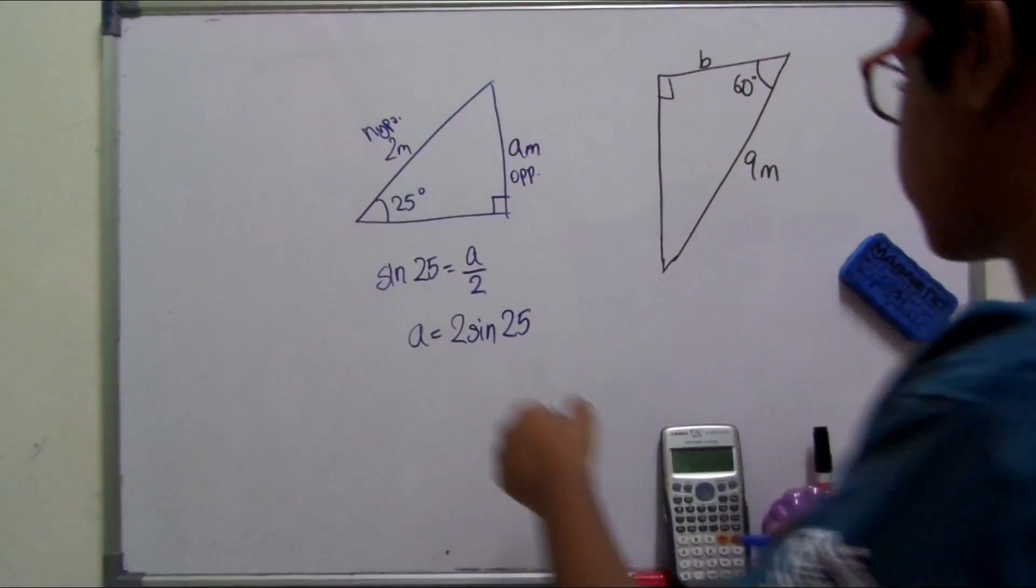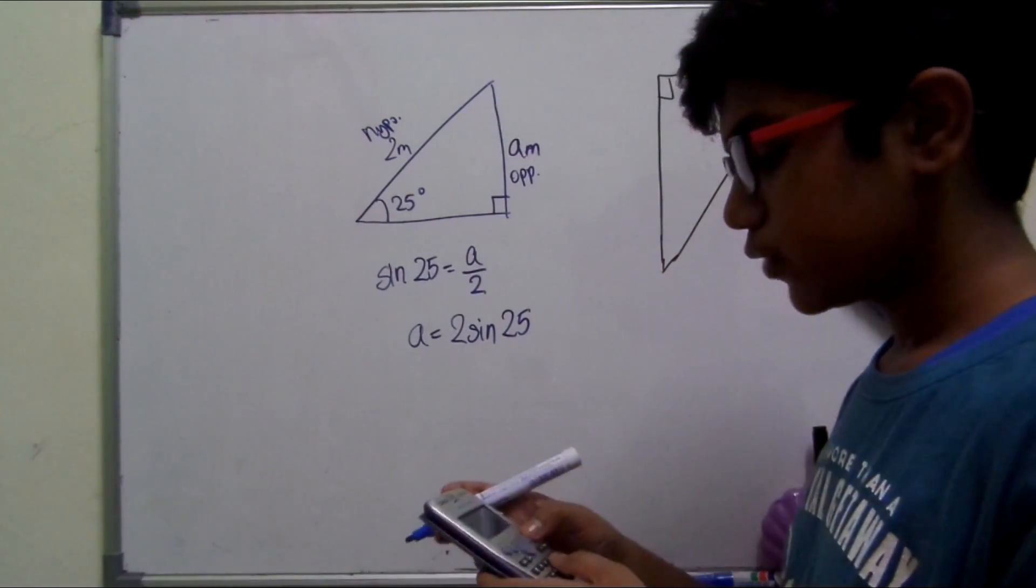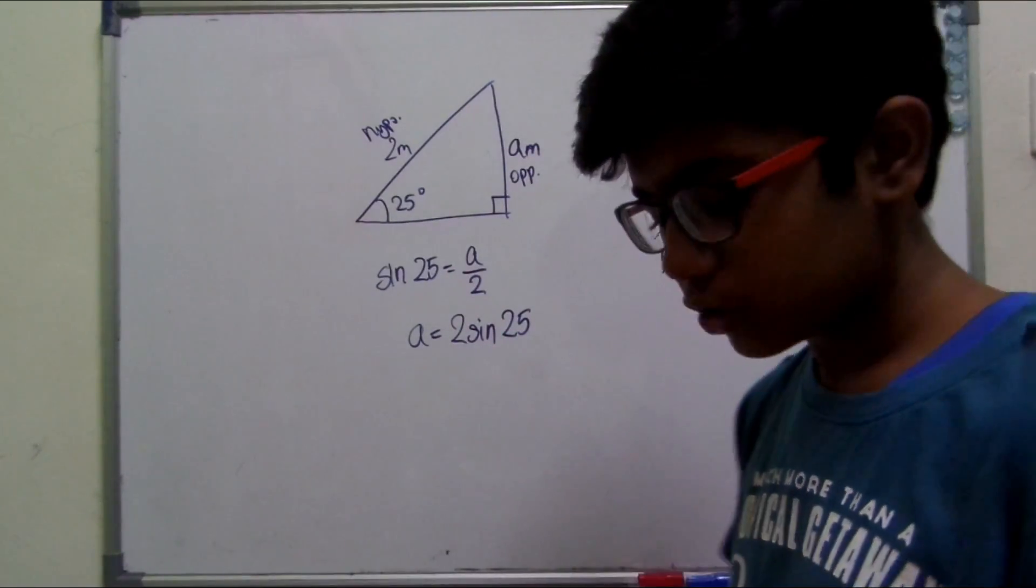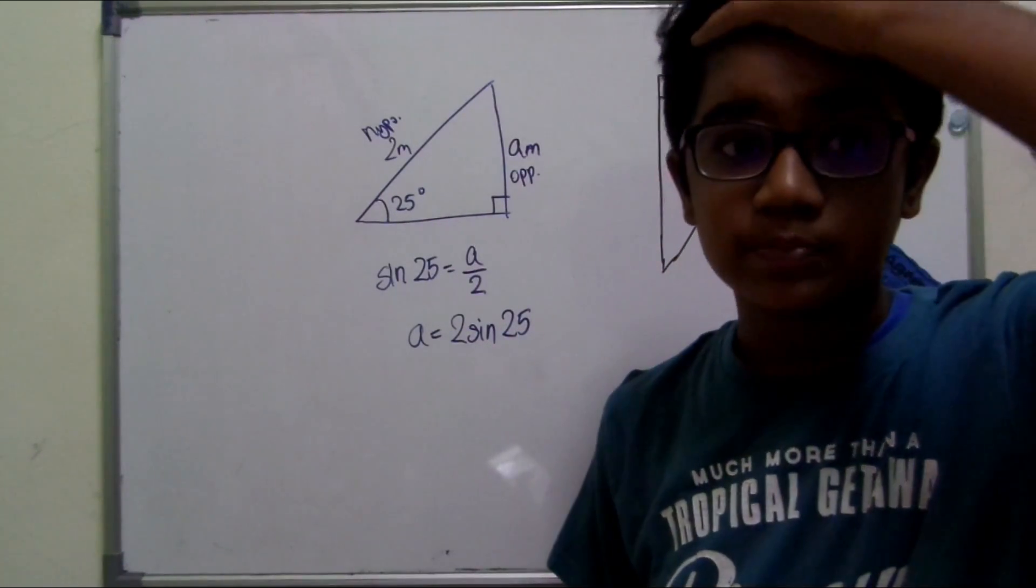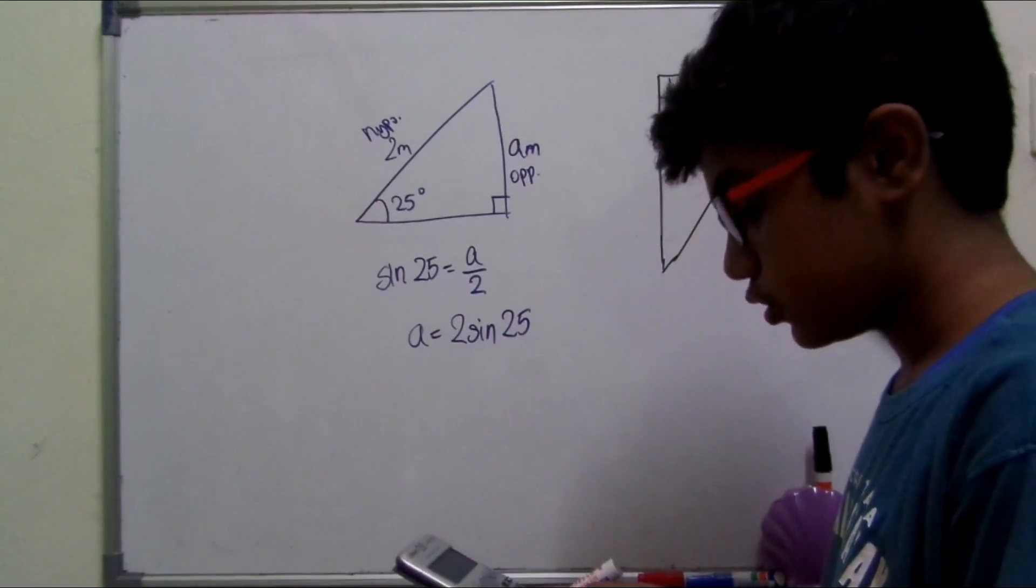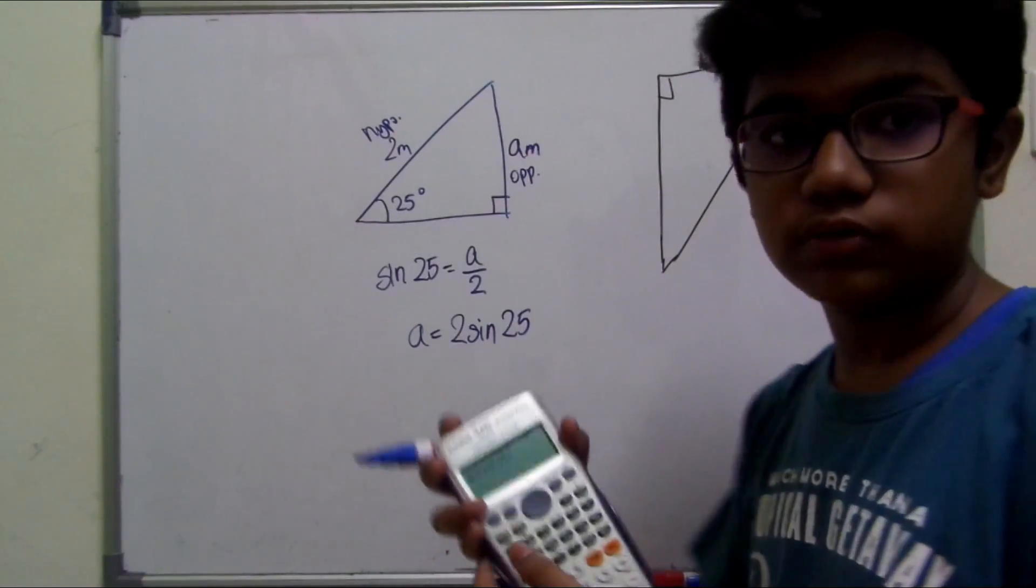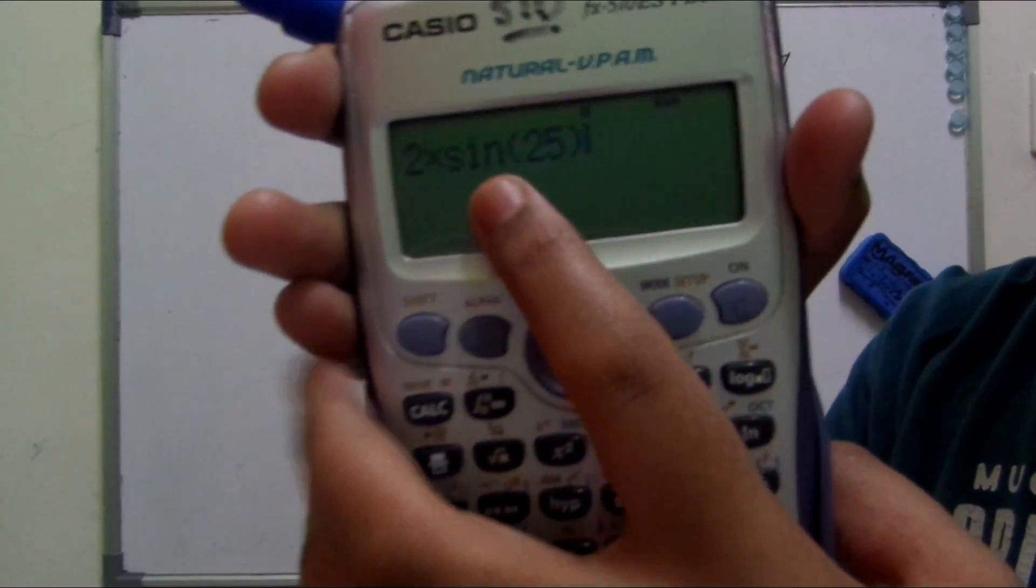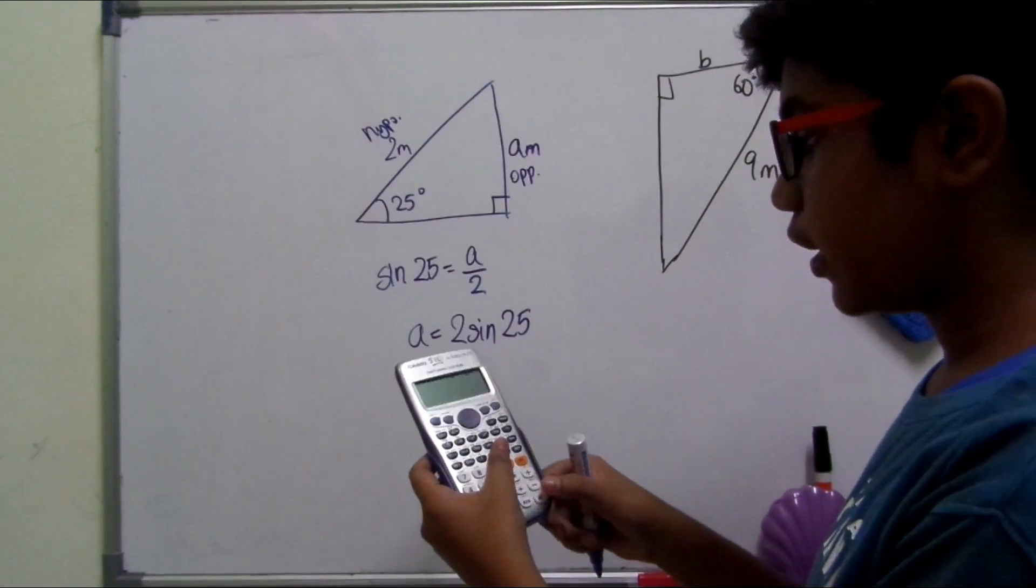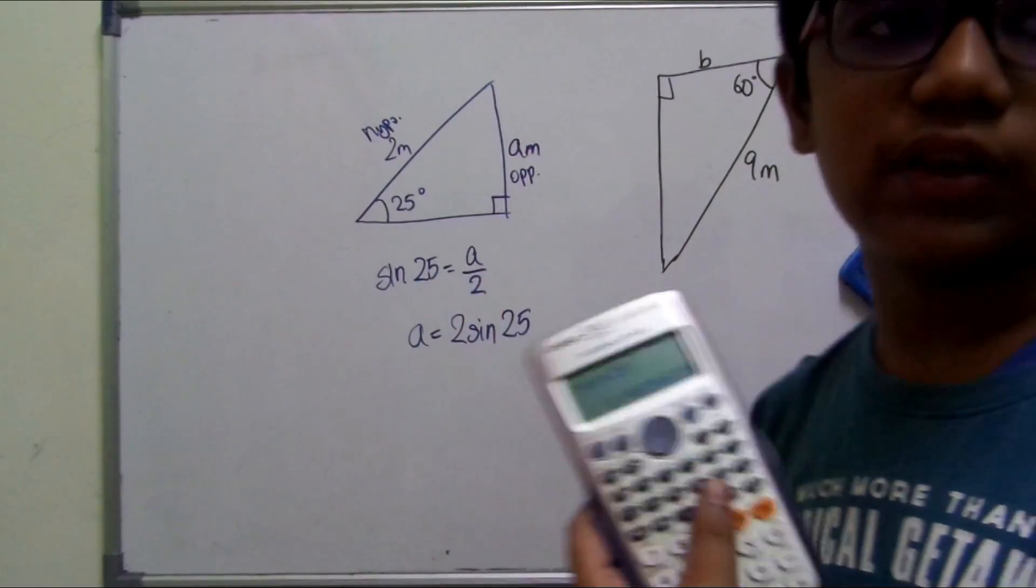And this is when it comes in handy when you have a calculator. We need a calculator for this sum because it will take you a few years to calculate what sine 25 is. It's going to be really complicated. So you need a scientific calculator and enter the values as follows: 2 times sine 25. And you get the value, which is 0.845236...